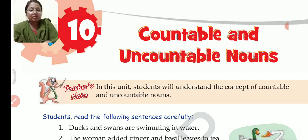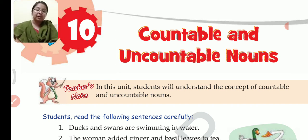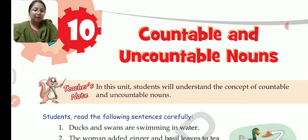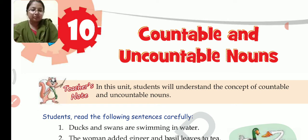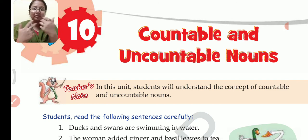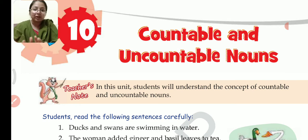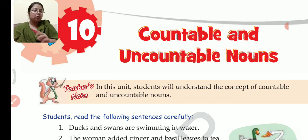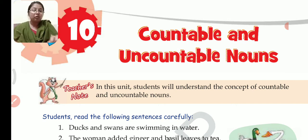Similarly, jam is uncountable. You cannot count jam — one jam, two jam, three jam. But if I say a bottle of jam, two bottles of jam, five bottles of jam, then the bottles can be counted. Similarly, gold — can you count gold? One gold, two gold? I am wearing rings, so can you count how much gold is there in each ring? No, you cannot. But if I say a gold ring, two gold rings, three gold rings, then that can be counted. Because you can count ring, but you cannot count gold.